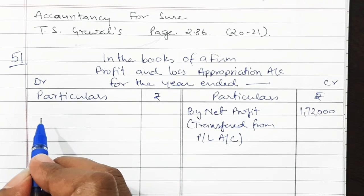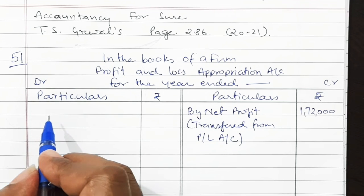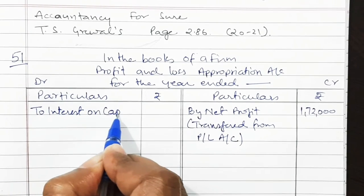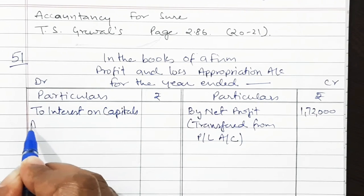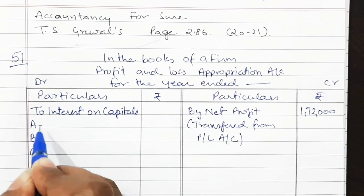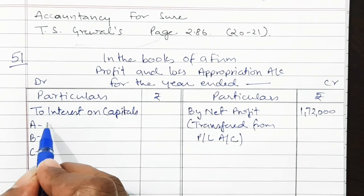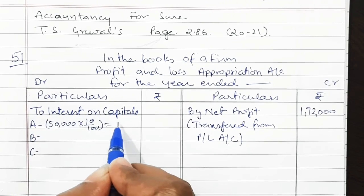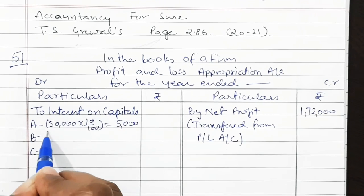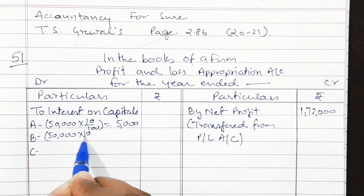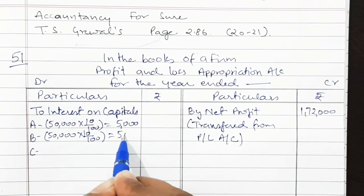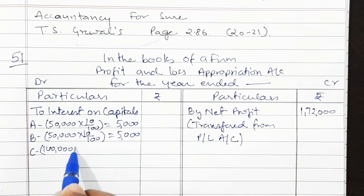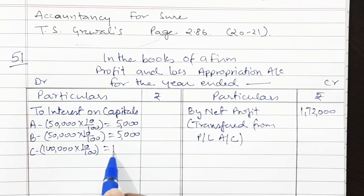Interest on capital is to be provided to all three partners at the rate of 10% per annum. For A and B, capital is Rs. 50,000 each, so 10% gives Rs. 5,000 each. For C, capital is Rs. 1,00,000, so 10% gives Rs. 10,000. Total interest on capital is Rs. 20,000.